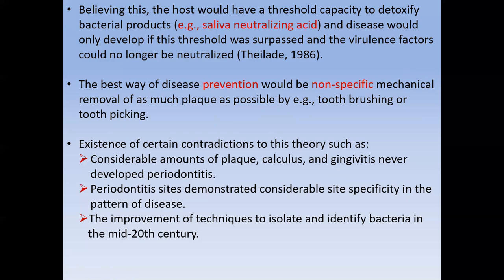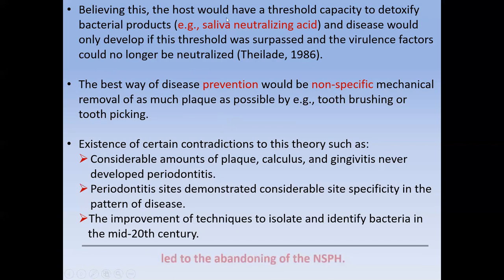Also, periodontitis patients demonstrate considerable site specificity — many patients have periodontitis on only one or two teeth or certain segments, without involvement of the whole oral cavity. If quantity of plaque were the cause, and plaque exists everywhere, gingivitis and periodontitis should develop everywhere. Furthermore, improvement in techniques to isolate and identify bacteria in the mid-20th century — especially the introduction of cultural techniques and microscopy — led to identifying specific pathogenic microorganisms within the plaque, leading to abandonment of the non-specific plaque hypothesis.